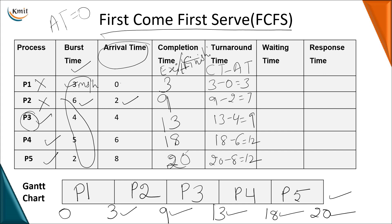Waiting time is turnaround time minus burst time. Turnaround times are 3, 7, 9, 12, 12. So: 3 minus 3 = 0; 7 minus 6 = 1; 9 minus 4 = 5 (but check burst time 4); 12 minus 5 = 7; 12 minus 2 = 10. Concentrate on the burst time column when computing these values.